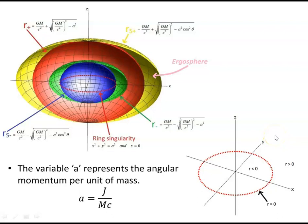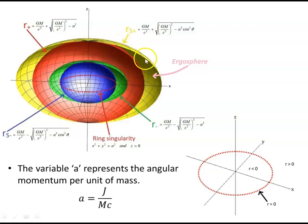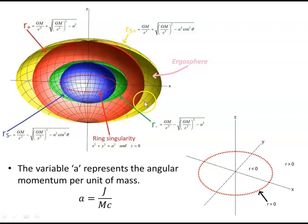We have a Kerr black hole structure. We have the ergosphere within this region and the second ergosphere within this region. We have the outer stationary limit surface or surface of infinite redshift in yellow, and then the inner stationary limit surface or surface of infinite redshift in blue. The outer event horizon in red and the inner event horizon in green. And then in the center region in the equatorial plane, we have a ring singularity.